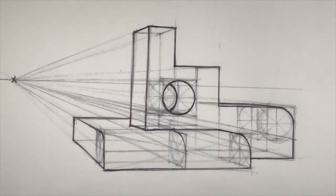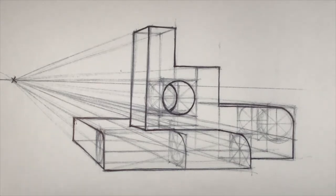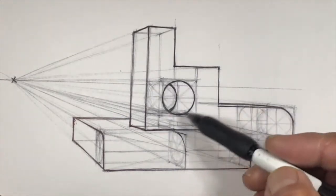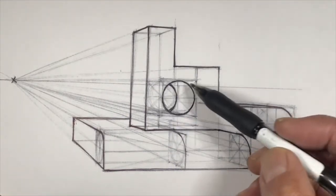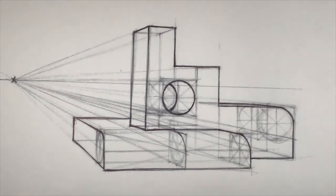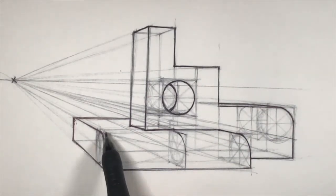In this sketch I wanted to show you that you can create radius edges from our understanding of ellipse constructions, and we can also create negative features using the same construction. A radius edge is an edge that is no longer a sharp edge but actually has a roll, a curve on that edge.